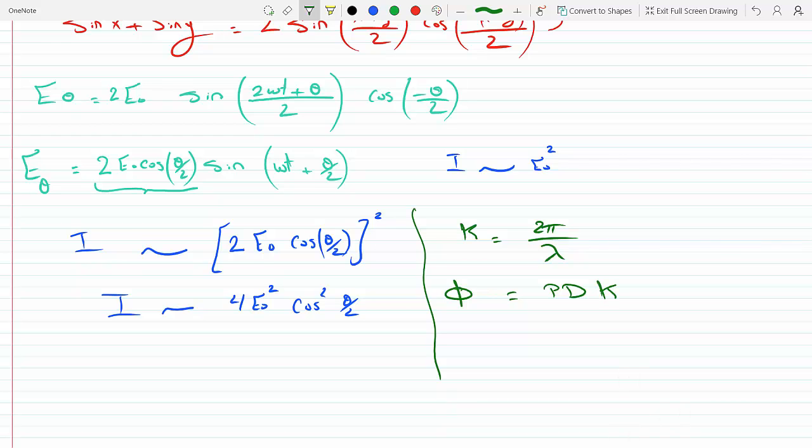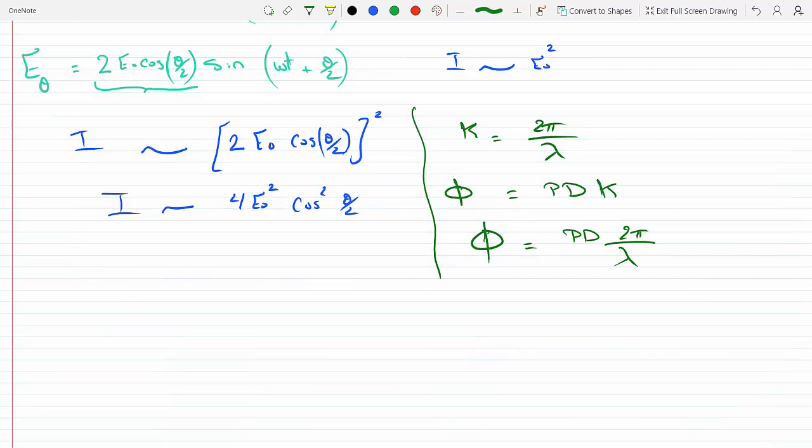And so this is the path difference times two pi over lambda. So physically speaking, what that means is the difference between the two paths that the two waves have undergone to get to their point, taken as a fraction of the wavelength of that wave, multiply that by the radians, two pi, because each period is two pi, gives you the phase difference.